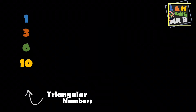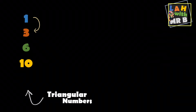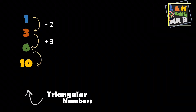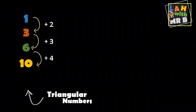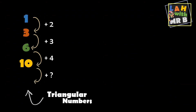So far we've found four triangular numbers: one, three, six, and ten. But can you see what's happening as we go from one triangular number to the next? Let's see if we can find a pattern. To get from one to three we add two; then to get from three to six we add three; to get from six to ten we add four. So we add two, then three, then four — can you see the pattern?